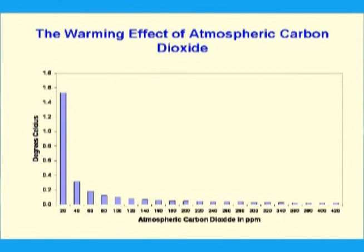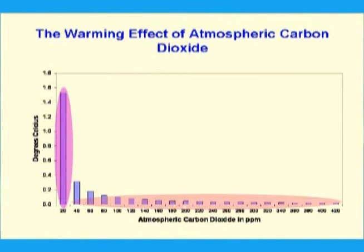Using the ModTran facility maintained by the University of Chicago, the relationship between atmospheric carbon dioxide content and increase in average global atmospheric temperature is shown in this graph. The effect of carbon dioxide on temperature is logarithmic, and thus climate sensitivity decreases with increasing concentration. The first 20 ppm of carbon dioxide has a greater temperature effect than the next 400 ppm.